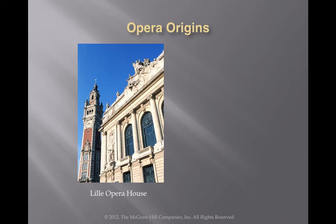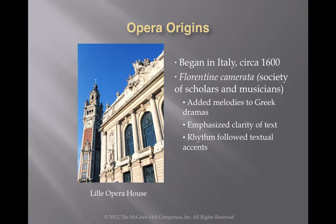In this chapter we are talking about opera. Opera began in Italy around 1600 and was started by a group known as the Florentine Camerata, a group of scholars and musicians who decided to add melodies and music to the Greek dramas, the plays, the stories from Greek mythology. And once they did that, they basically came up with the style of opera — adding music to a theatrical work.